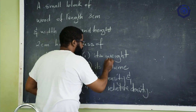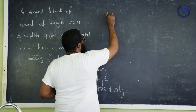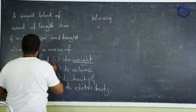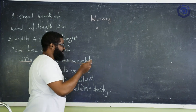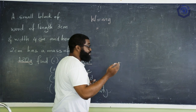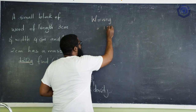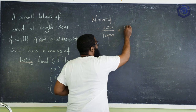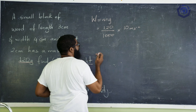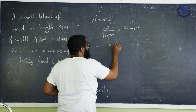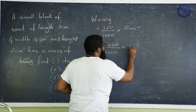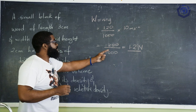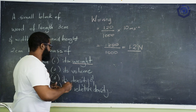First, we find weight. The formula is W = mg. Our mass is given as 120 grams, but mass must be in kilograms, so we divide by 1,000: 120 ÷ 1,000 = 0.12 kg. Using acceleration due to gravity as 10 m/s² for simplicity, weight = 0.12 × 10 = 1,200 ÷ 1,000 = 1.2 newtons. Our weight is 1.2 newtons.